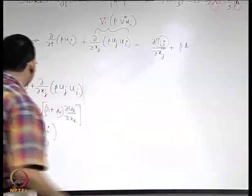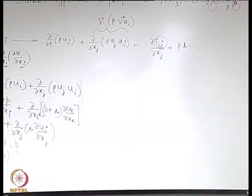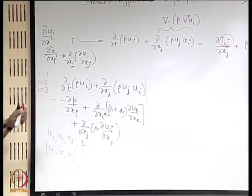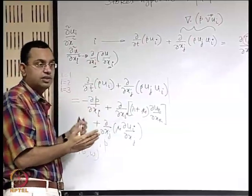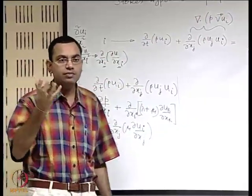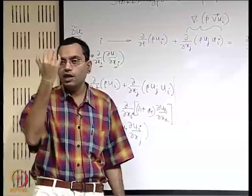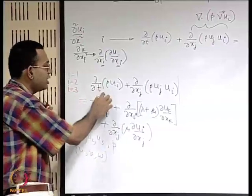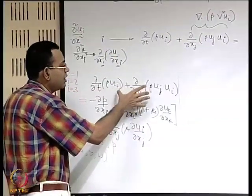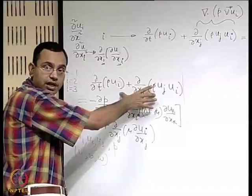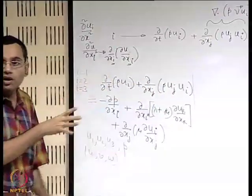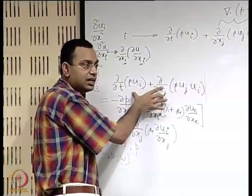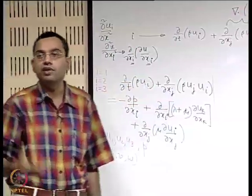This current form is known as the conservative form of the equation, because we have not disturbed the form that came from the control volume conservation via Reynolds transport theorem. We have not simplified it further, so it can still be recognized as coming directly from a conservation principle. Utilizing the continuity equation, we will simplify the left-hand side further to obtain what is known as the non-conservative form.